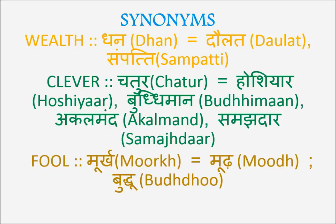And fool is 'buddhu,' 'murkh,' or 'moorh.' Example: 'Woh bada hi buddhu hai — tum kya use buddhiman samajh rahe the? Woh toh bada hi buddhu nikla' — you were thinking of him as a very clever boy, but he turned out to be a big fool. So 'murkh,' 'buddhu,' and 'moorh' all mean fool.